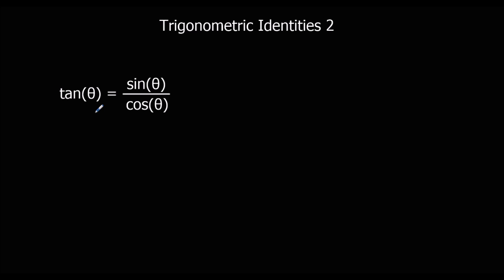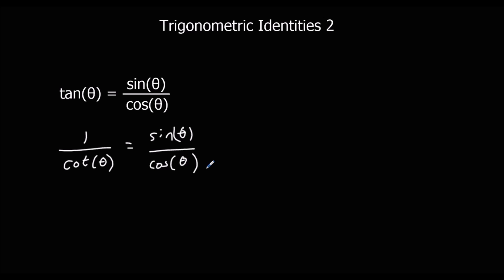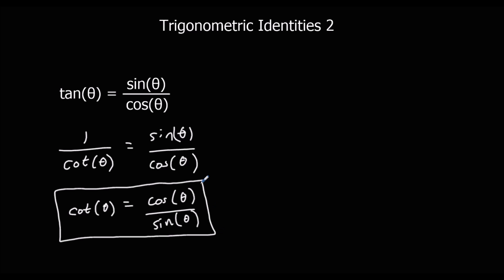We're going to use this to make an identity for cot θ. If we change tan θ to 1 over cot θ, and then flip both sides over, we get cot θ equals cos θ over sin θ. So we can change cos over sin to cot, and in the same way we can change sin over cos to tan.